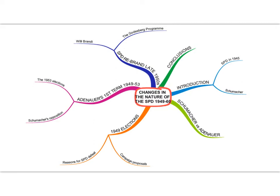Use the mind map to note key points around the edge as we go through the slideshow — starting with the introduction: Schumacher versus Adenauer, the 1949 elections, Adenauer's first term 1949 to 53, then the rebrand of the SPD following Schumacher's death in 1952, culminating in the Godesberg Program and the contribution of Willy Brandt.